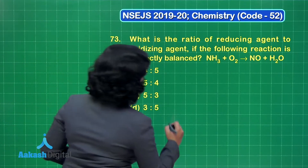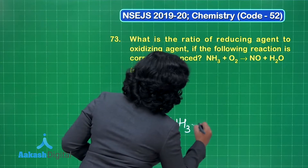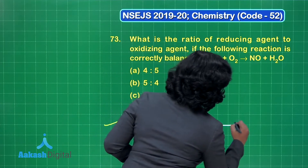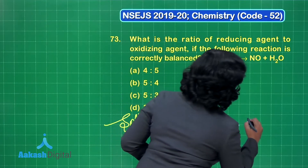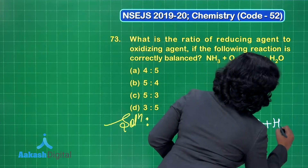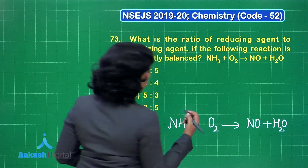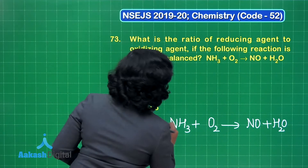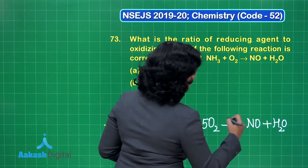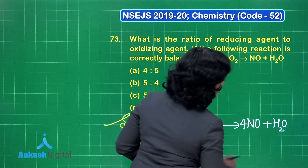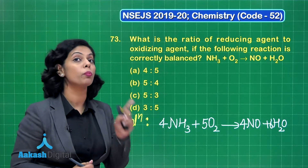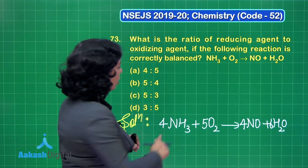The balanced chemical equation: ammonia NH3 reacts with oxygen giving nitric oxide NO and H2O. When balanced, you get 4 NH3 + 5 O2 → 4 NO + 6 H2O. To solve this type of question, your balancing skills should be good.